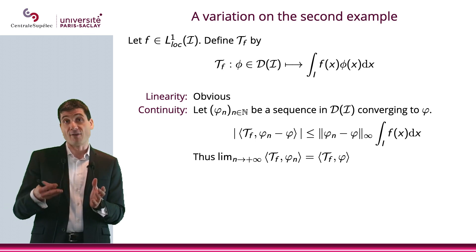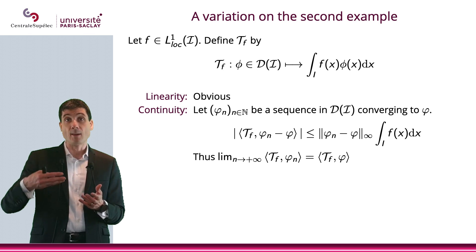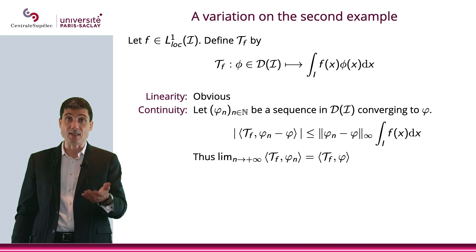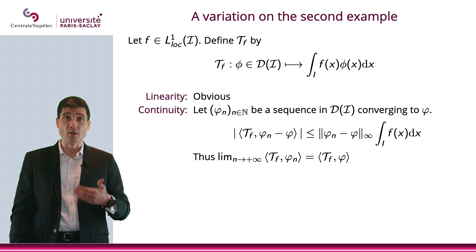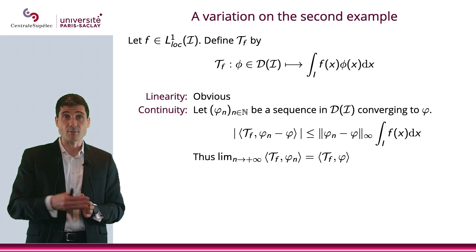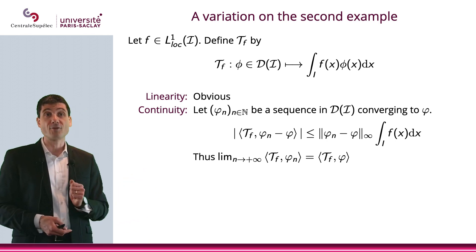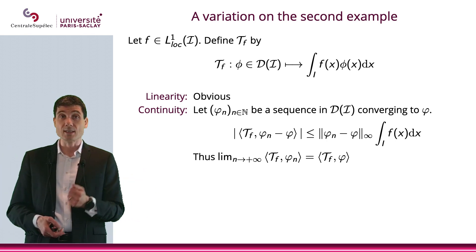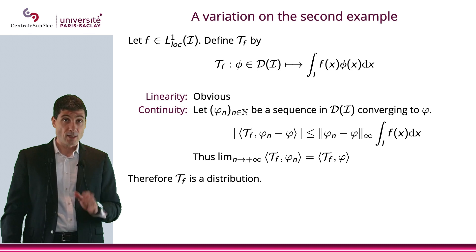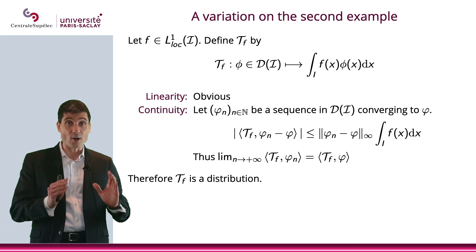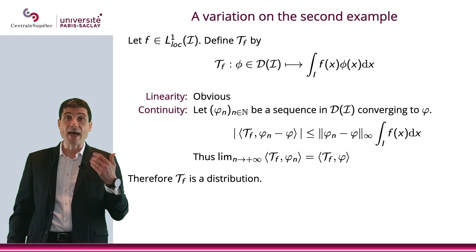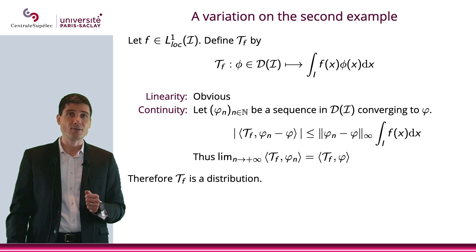The L∞ norm of φₙ - φ goes to zero because convergence in D implies uniform convergence, which implies convergence of (φₙ - φ) in L∞ norm to zero. Therefore, we do have the limit of Tf(φₙ) equal to Tf(φ), so Tf is a distribution. This is what we're going to use in the next video to include L¹_loc in the space of distributions.